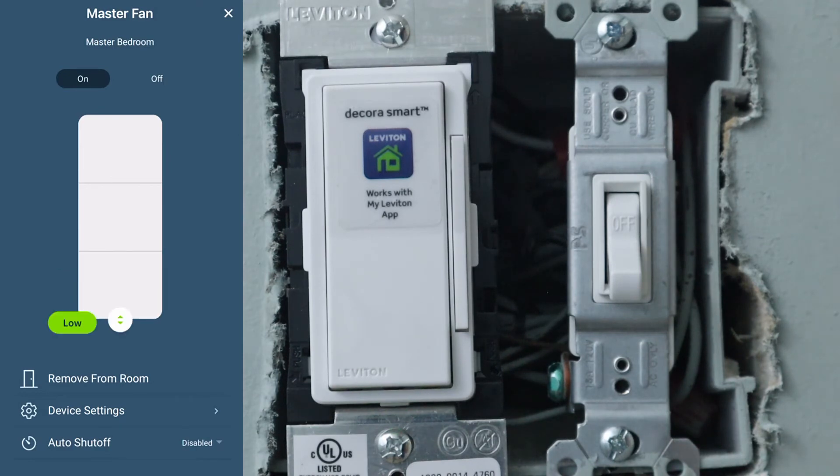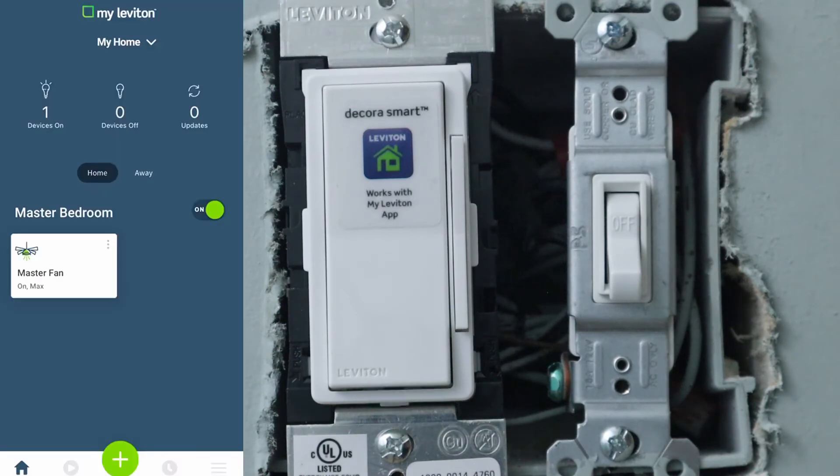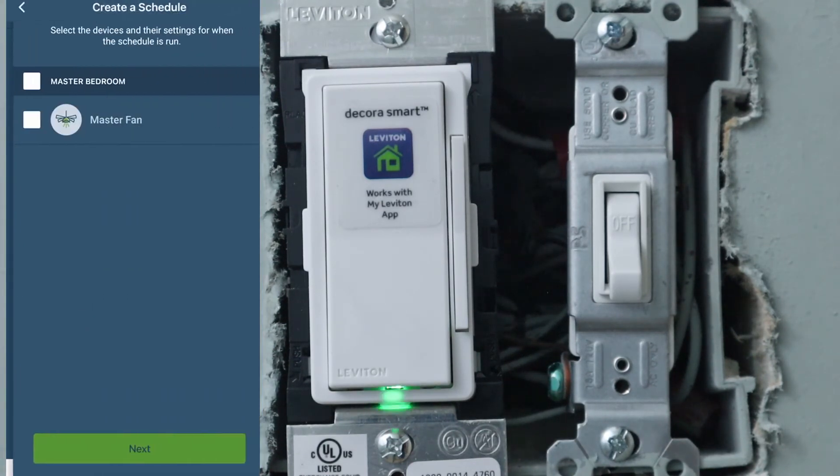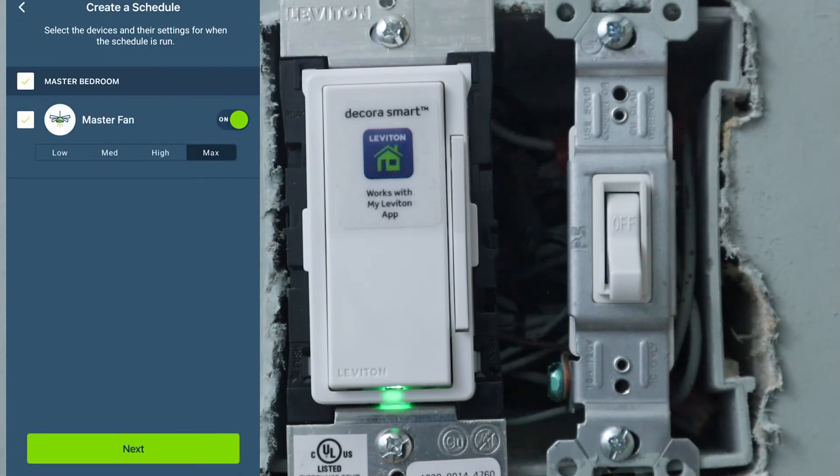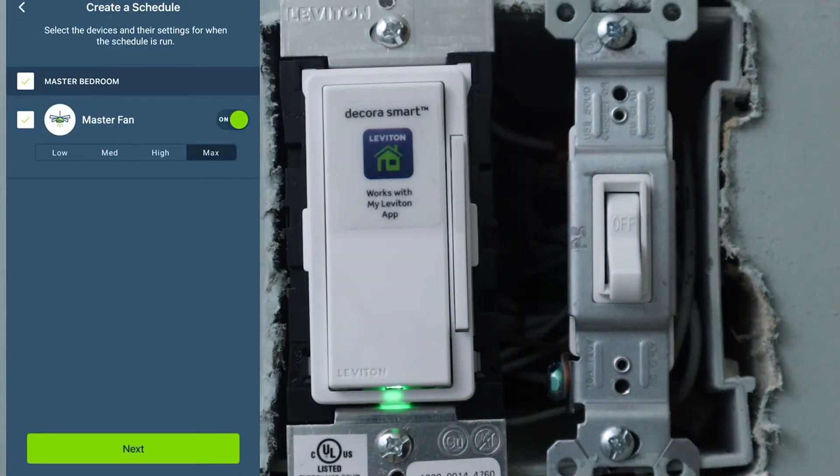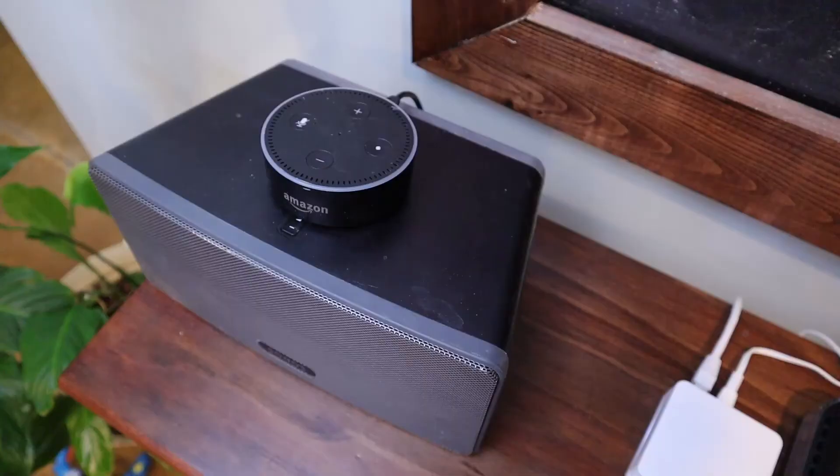Once you've got everything set up, you can then customize things the way that you like it. Everything is very self-explanatory, very easy to use. And now you are well on your way to just being able to be lazy and not have to get up anymore to turn on and adjust your fan. Alexa, turn on the fan. Okay.